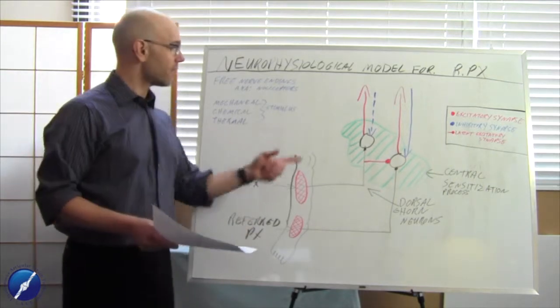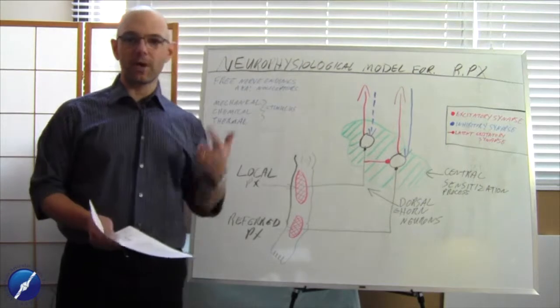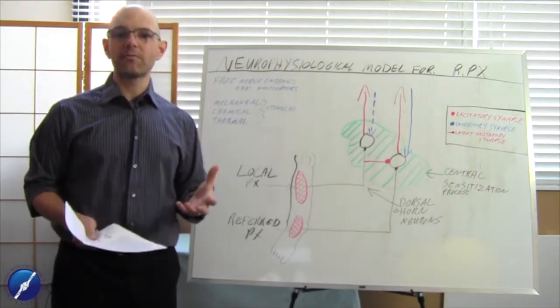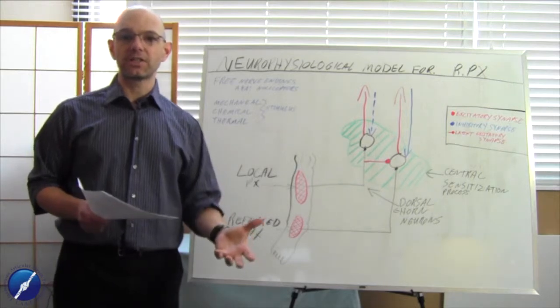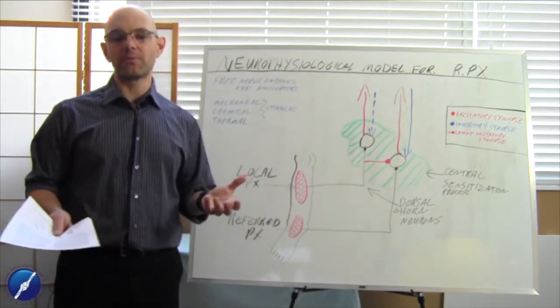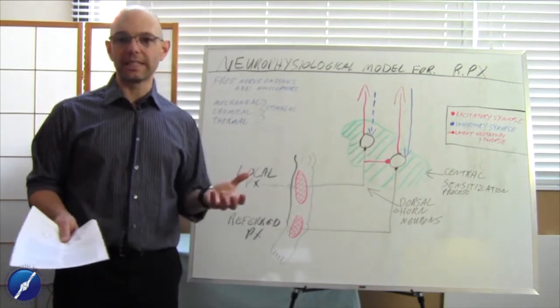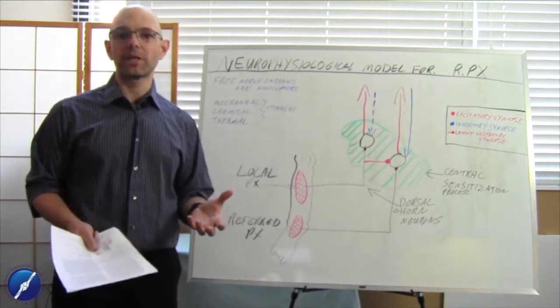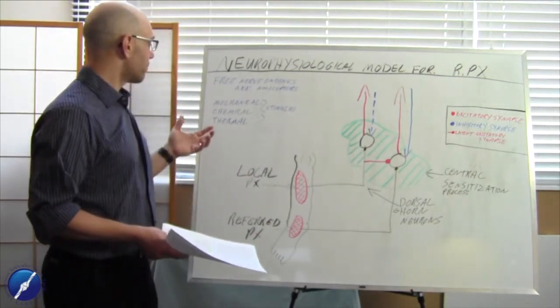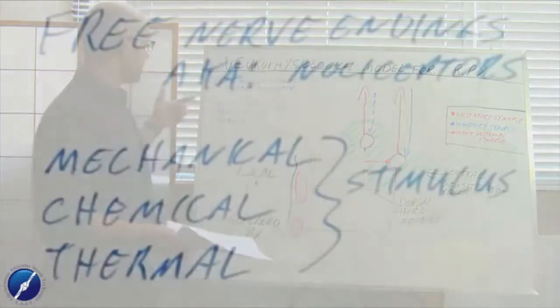Now these nociceptors, they can relay messages of balance, coordination, interoception, kinesthetic awareness, but they can also change and they can send danger messages, not pain messages. They can send danger messages that go through an excitatory synapse up to your primitive brain area, and then that primitive brain area has to decide is it a danger sort of setting or is it something that we've done before and it's not too big of a deal and we don't really need to have a pain perception for the body.